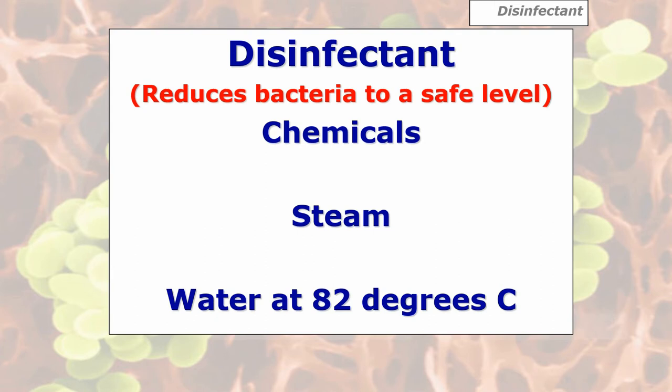The sort of things we can use as disinfectants: you've got chemicals such as bleaches and disinfectants — disinfectant is a chemical. There are different types of disinfectants that we use.